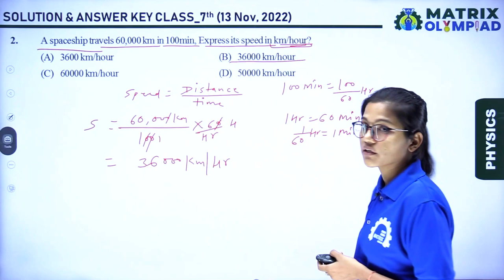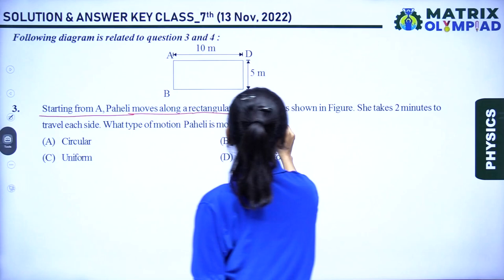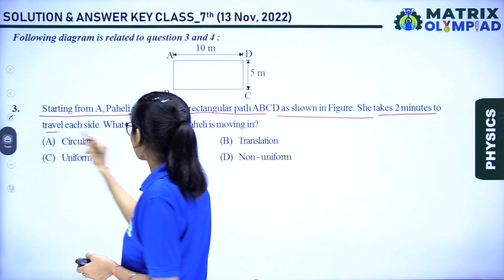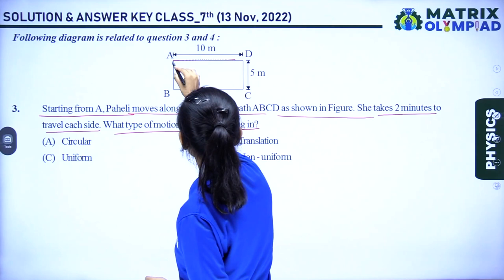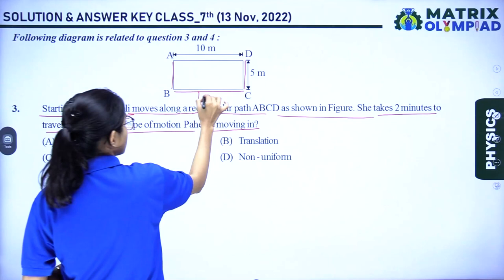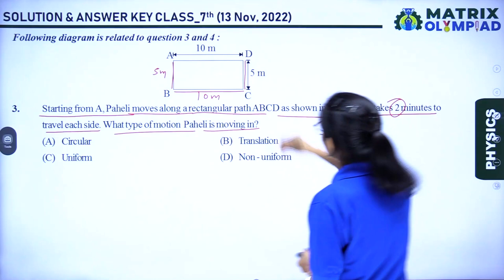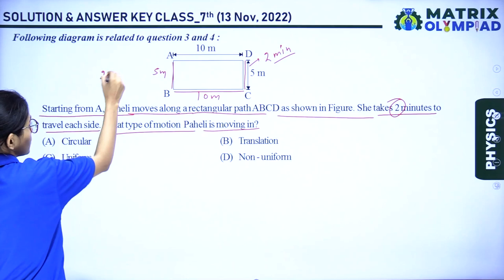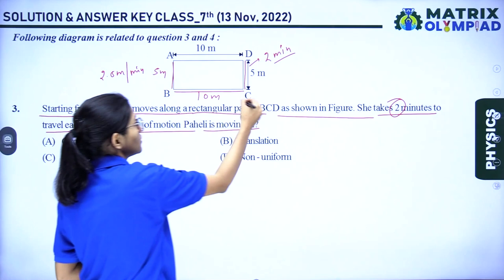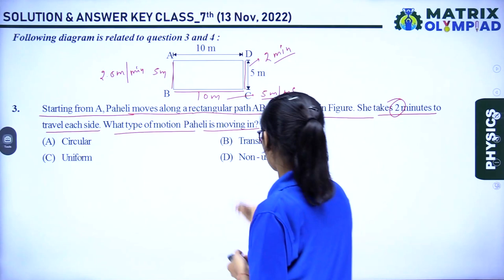Question number 3: a valley moves along a rectangular path ABCD as shown in the figure, taking two minutes to travel each side. The rectangle is 10 meters by 5 meters. The speed from A to B is 2.5 meters per minute, and from B to C is 5 meters per minute. Since speed is not constant, the valley is doing non-uniform motion. The answer is option D.